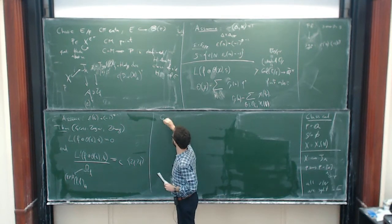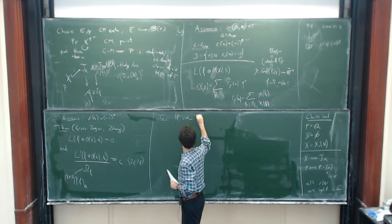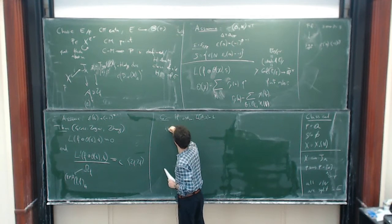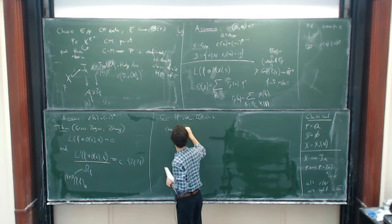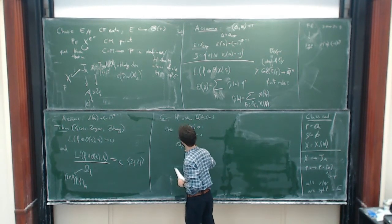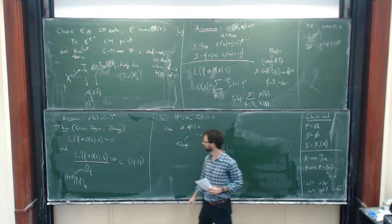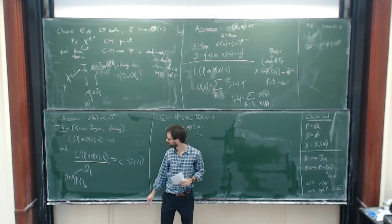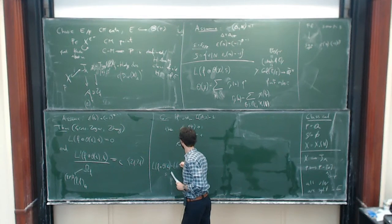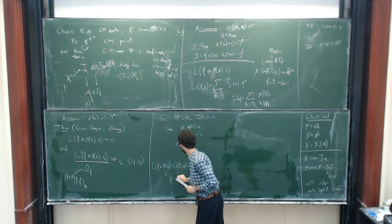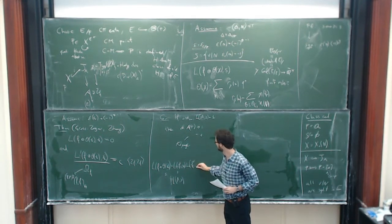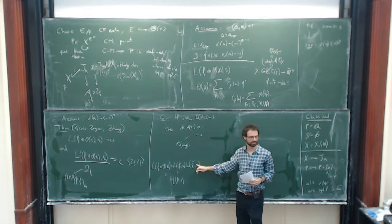What you can deduce from this is that if the order of vanishing of the L-series of A is 1, then the rank of A(F) is at least 1, and actually equals 1 if you further use the work of Kolyvagin. Note that the L-function used is not exactly the L-function of A — it's the L-function of the base change of A to some extension. This L-function factors as the product of L(F, s) — the same by modularity as L(A, s) — times the L-function of the twist of F by the character epsilon.